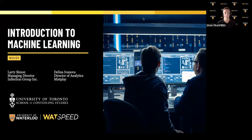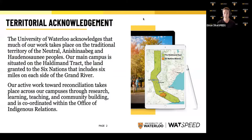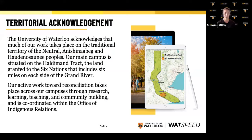Welcome to our Introduction to Machine Learning Workshop. The University of Waterloo acknowledges that much of our work takes place on the traditional territory of the Neutral, Anishinaabeg, and Haudenosaunee peoples. Our main campus is situated on the Haldeman Tract, the land granted to the Six Nations that includes six miles on each side of the Grand River. Our active work towards reconciliation takes place across our campuses through research, learning, teaching, and community building, coordinated within the Office of Indigenous Relations. Welcome, everyone. Thank you for joining us. My name is Ethan, and I work for Watspeed at the University of Waterloo.